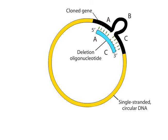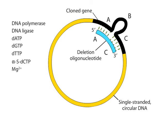Once the oligonucleotide is annealed, DNA polymerase, DNA ligase, dATP, dGTP, dTTP, alpha-S-dCTP, and magnesium are added to the reaction mixture.